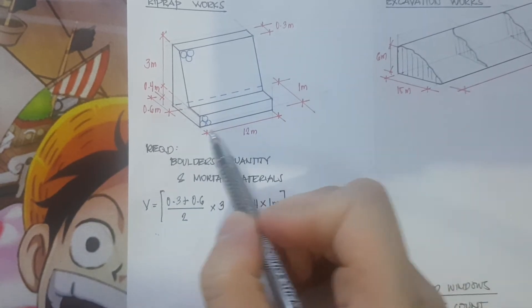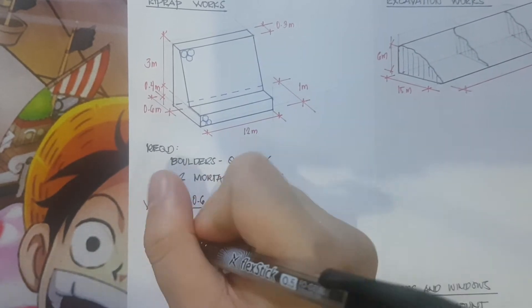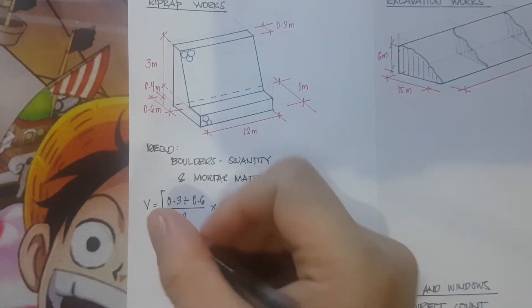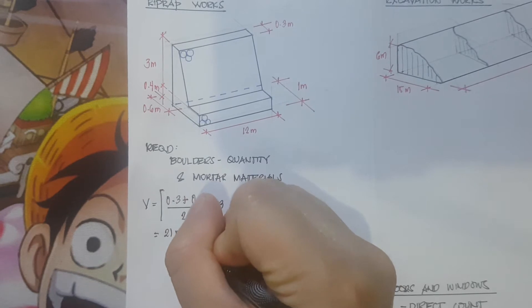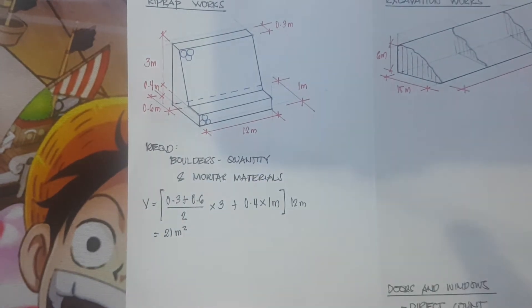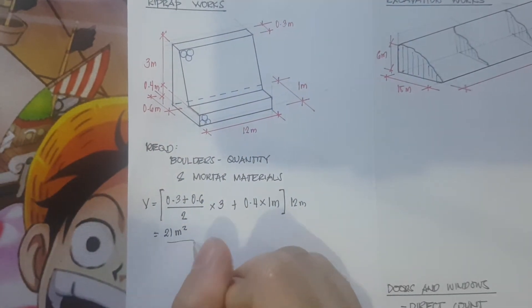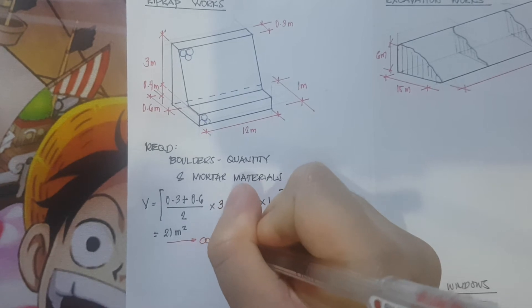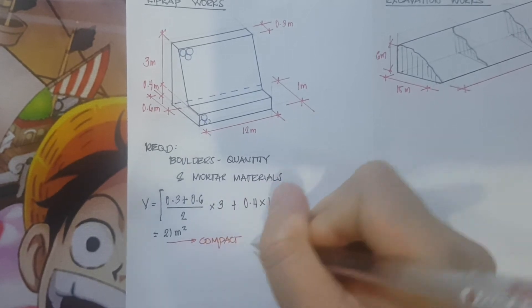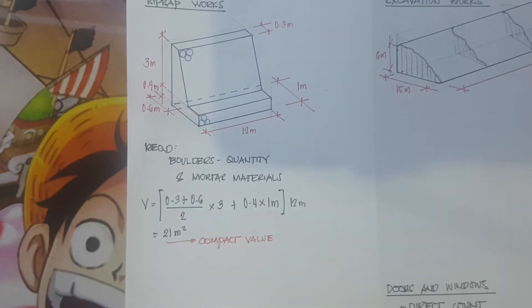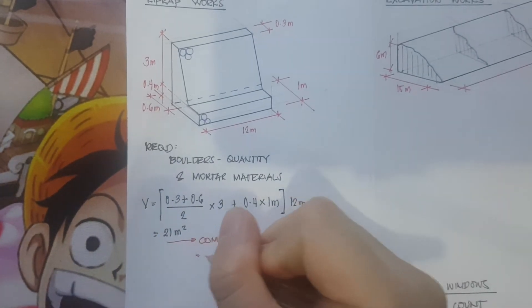Therefore, the volume is equivalent to 21 cubic meters. We call this value the compact value or the arranged volume.